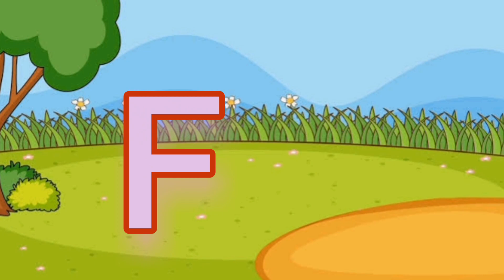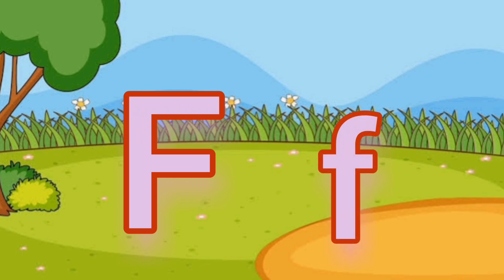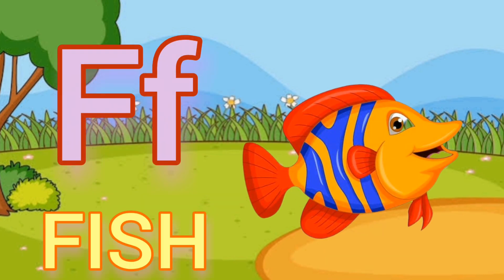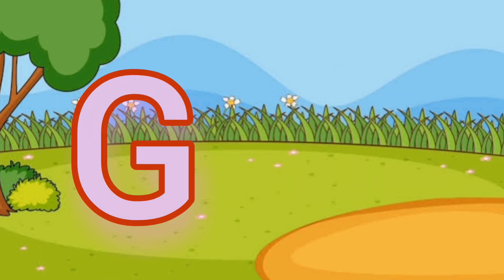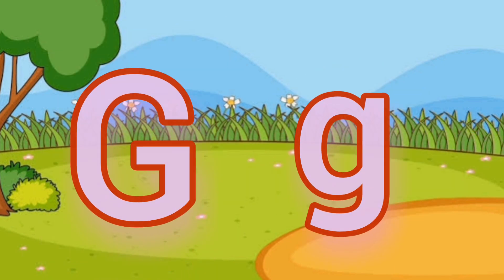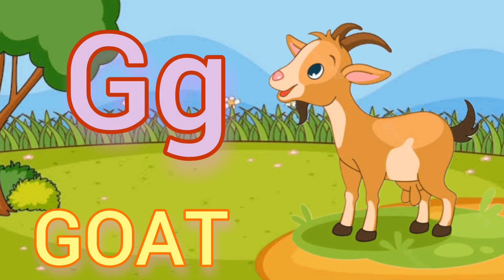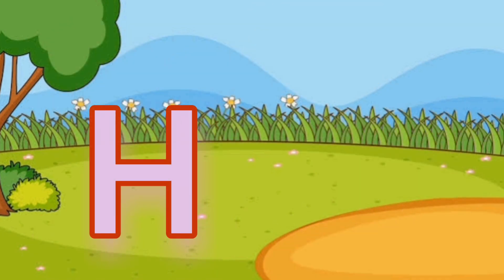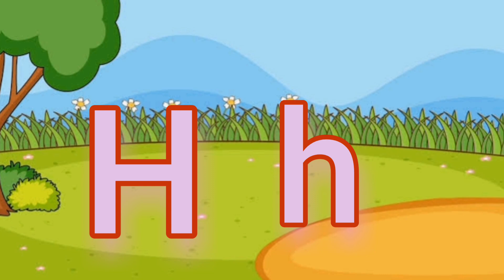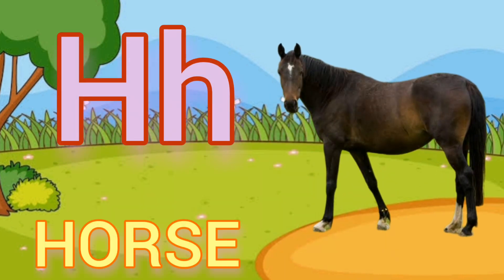Capital F, small f. F for fish. Capital G, small g. G for goat. Capital H, small h. H for horse.